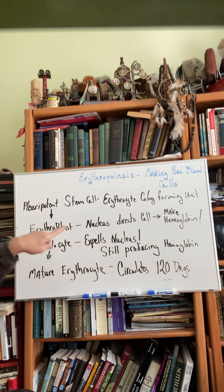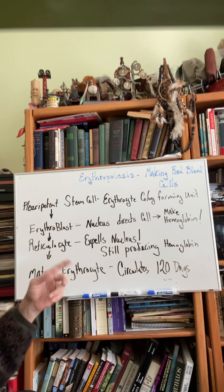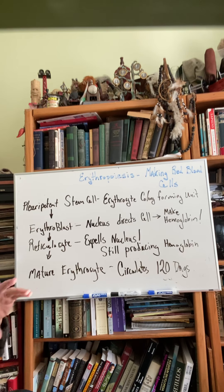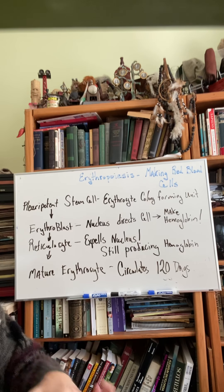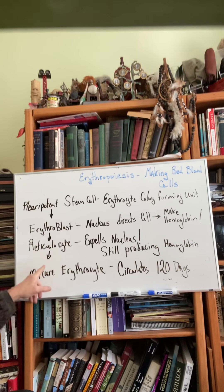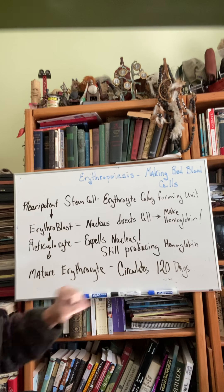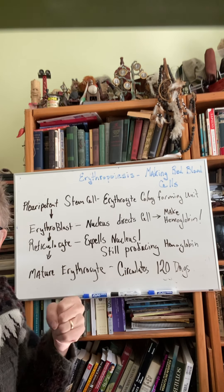Reticulocytes are erythroblasts that have already expelled their nucleus but are still producing hemoglobin. Eventually, these reticulocytes finish the process of translation and go into circulation as mature erythrocytes. And as we said, how long do these things live? They live about 120 days.